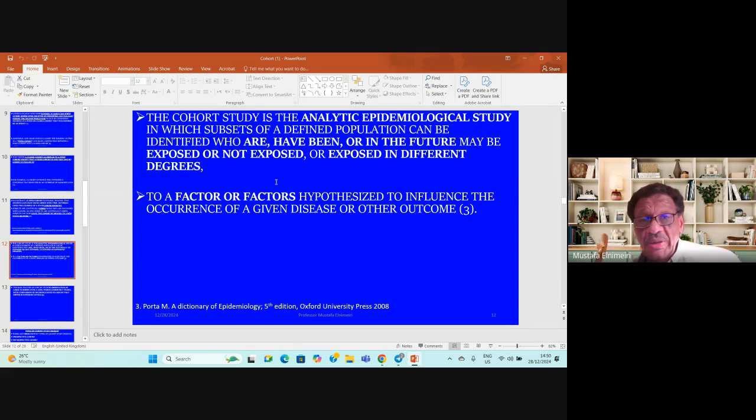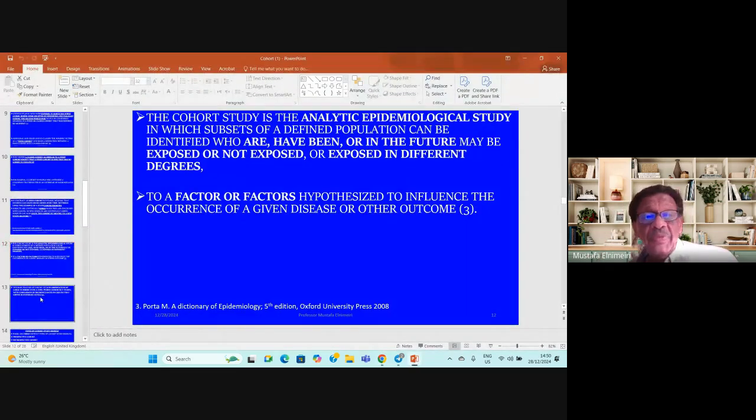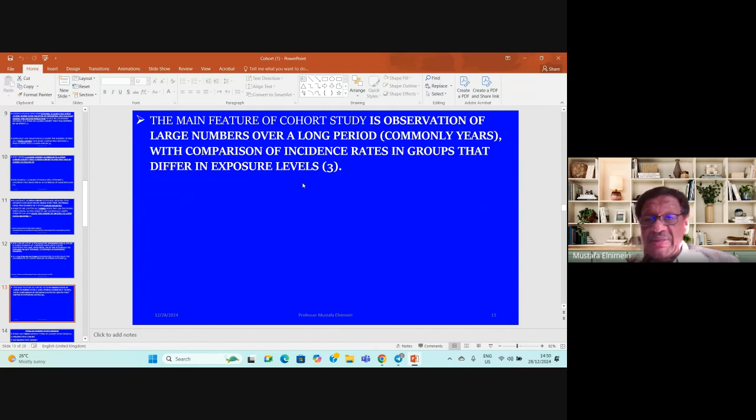The cohort study is an analytical epidemiological study in which subjects are identified who are or have been or may be exposed in different degrees to a factor assumed to influence the occurrence of a given disease or outcome. The main feature is observation of large numbers over a long period, usually years.